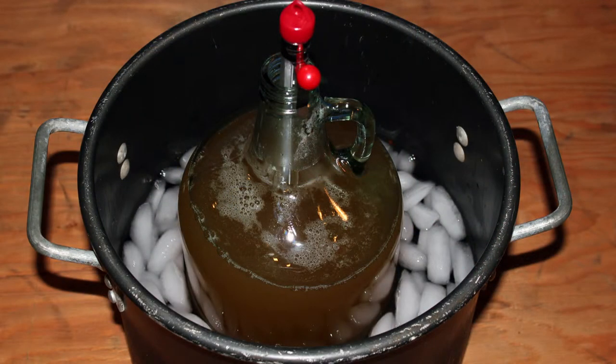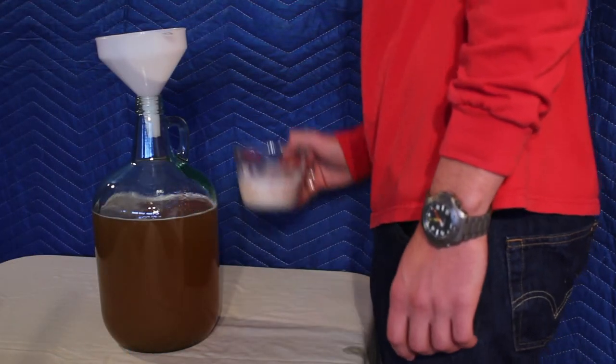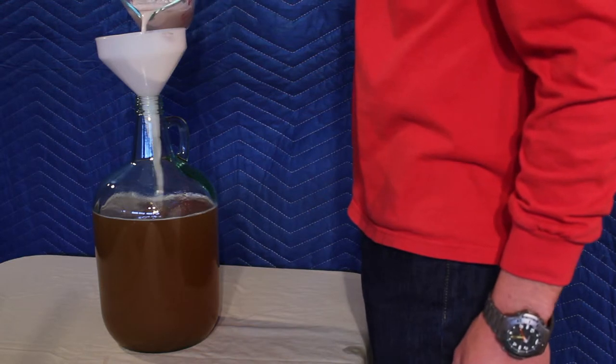We are going to pour water into our honey mixture until it reaches 80 degrees. Any warmer and you will kill your yeast. Now we are going to pour our yeast slurry into our honey mixture.